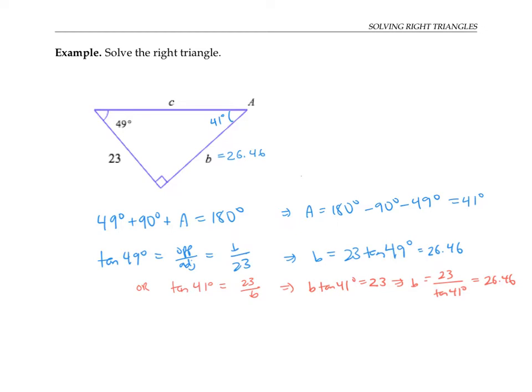Next, to find the side length C, we have a few options. We could use a trig function again. For example, we could use the cosine of 49 degrees. That's adjacent over hypotenuse, which is 23 over C. Solving for C, we get that C is 23 over cosine 49, which works out to 35.06 units.